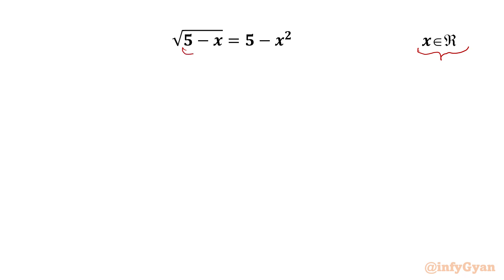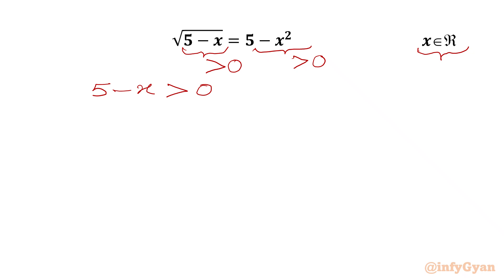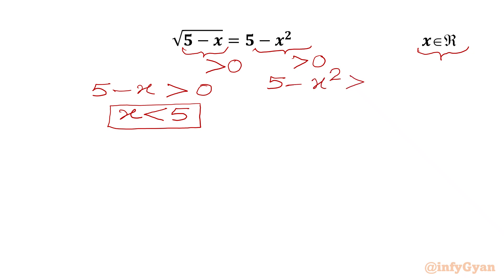I will begin with writing the LHS. The radicand must be positive for x to be real, and the right hand side must be positive as the square root will give us a positive number only. So from our left side condition, 5 minus x should be greater than 0, or x should be less than 5. This is one condition from the left hand side.